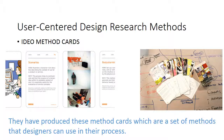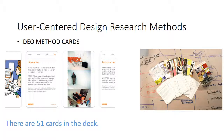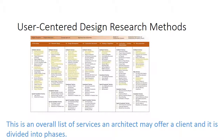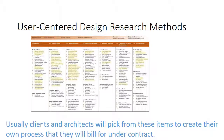They have produced these method cards, which are a set of methods that designers can use in their process. There are 51 cards in the deck. This is the scope of services outlined by the Canadian Handbook of Architectural Practice — an overall list of services an architect may offer a client, divided into phases. Usually clients and architects will pick from these items to create their own process that they will bill for under contract.